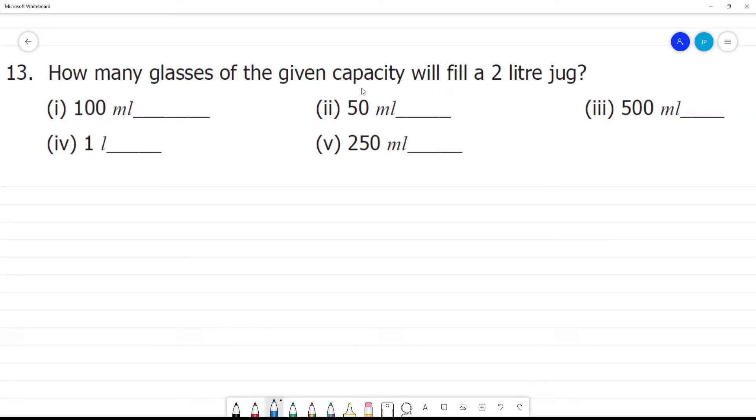How many glasses of the given capacity will fill a 2 liter jug? We have a 2 liter jug. 2 liters is equal to how many ml? 2,000 ml. 1 liter is equal to 1,000 ml, so 2 liters is equal to 2,000 ml.